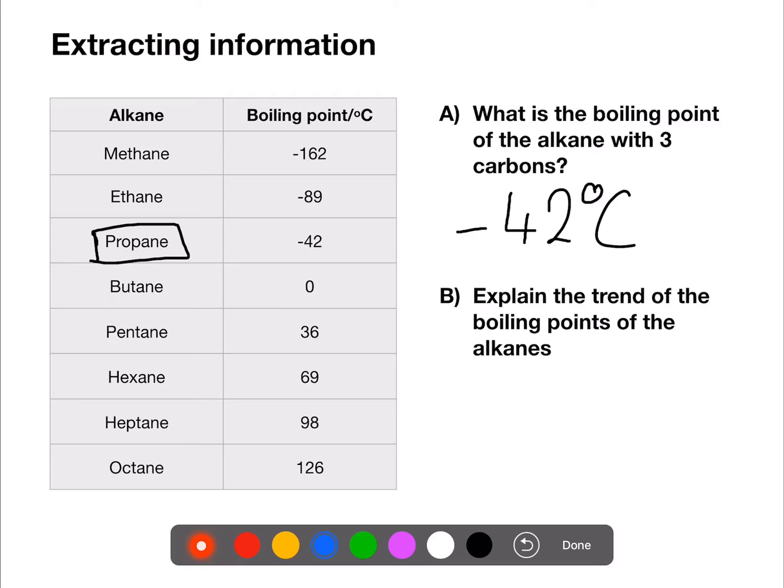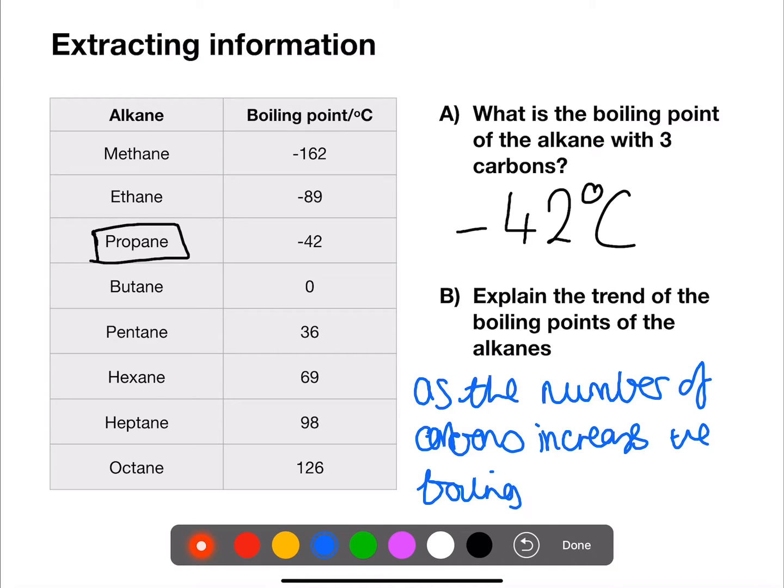This will be the start of our answer. So as the number of carbons increases, what happens to the boiling point? We can see that the boiling point also increases from negative 162 to 126. The increase in the number of carbons is what is causing the increase in the boiling point, not the other way around.